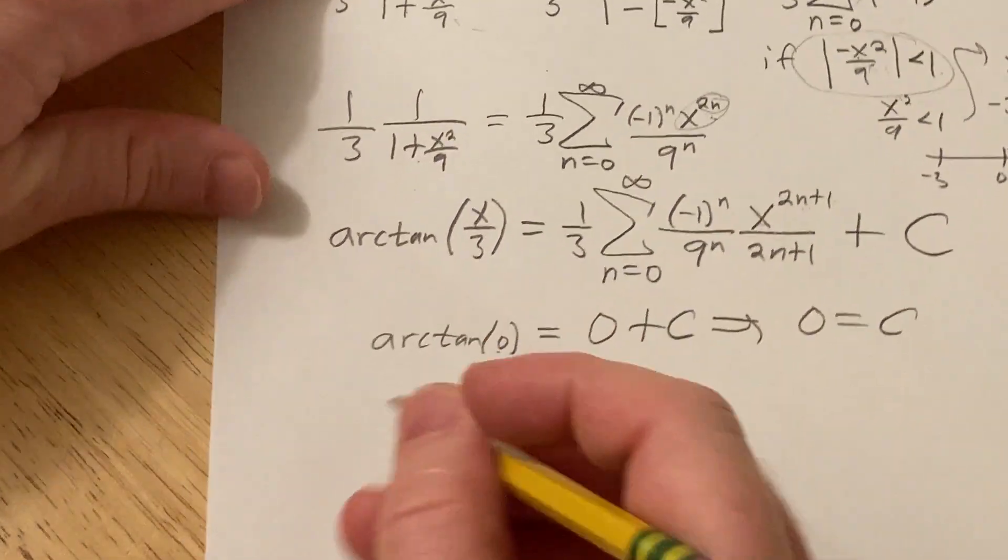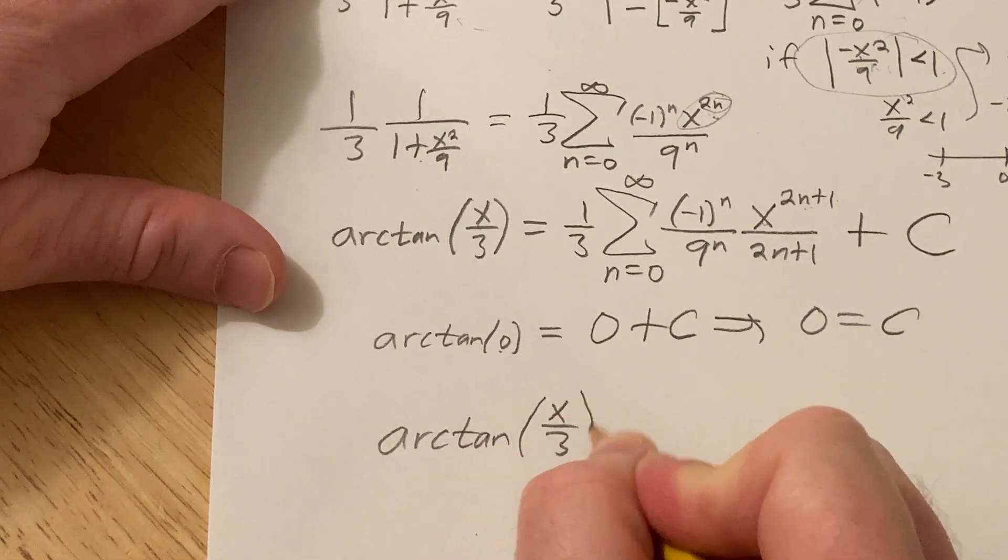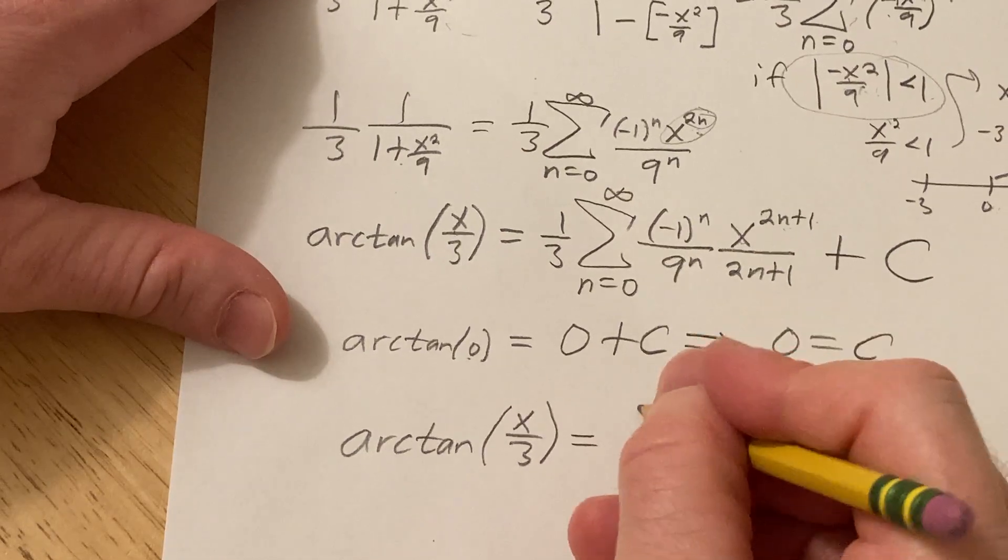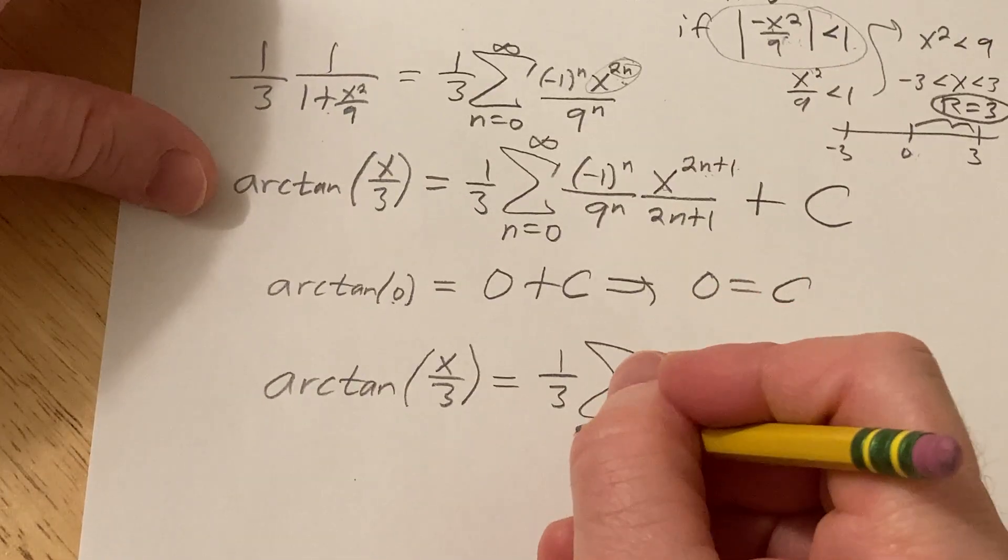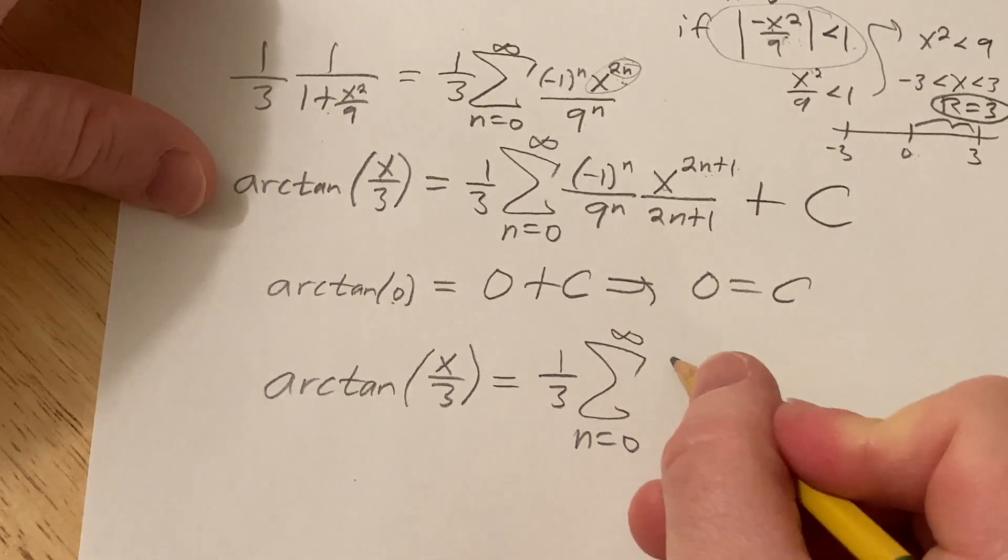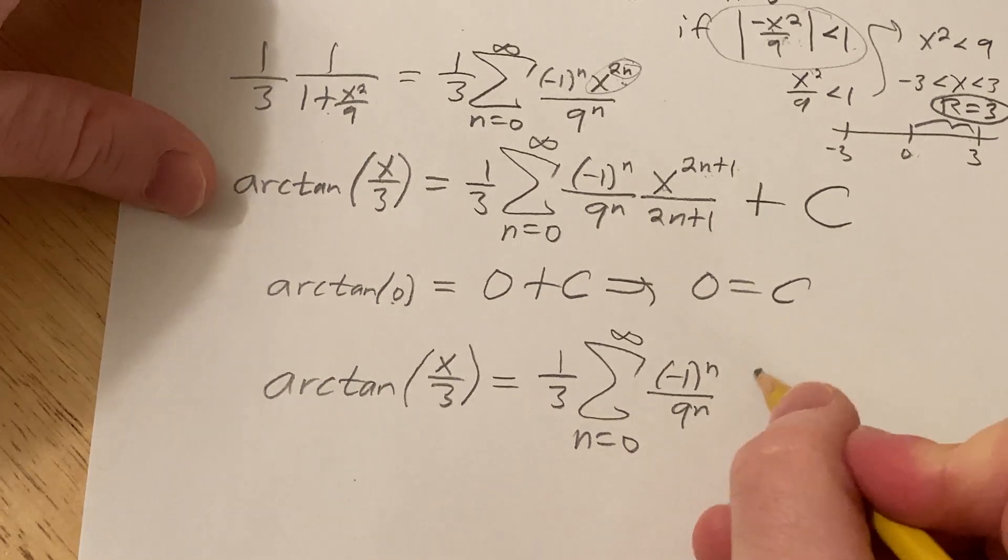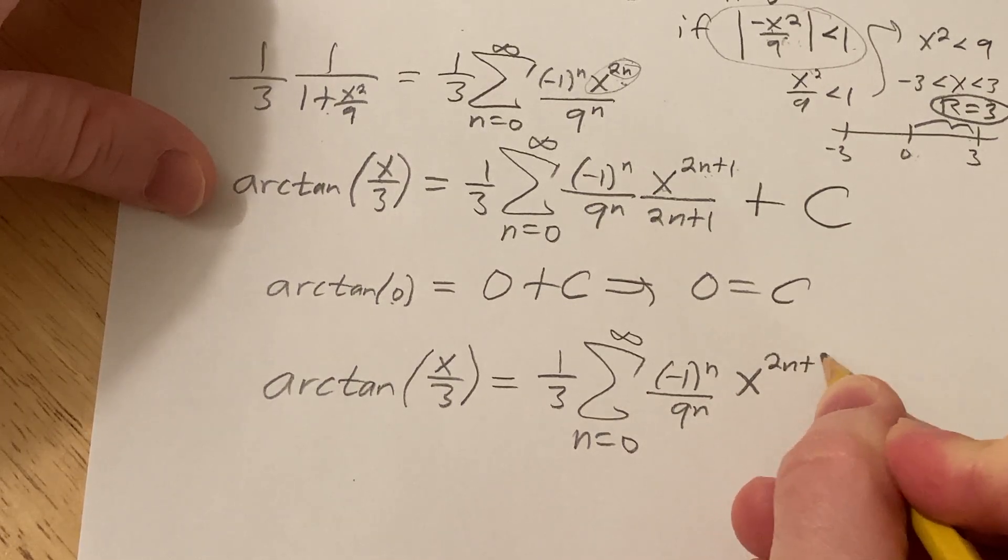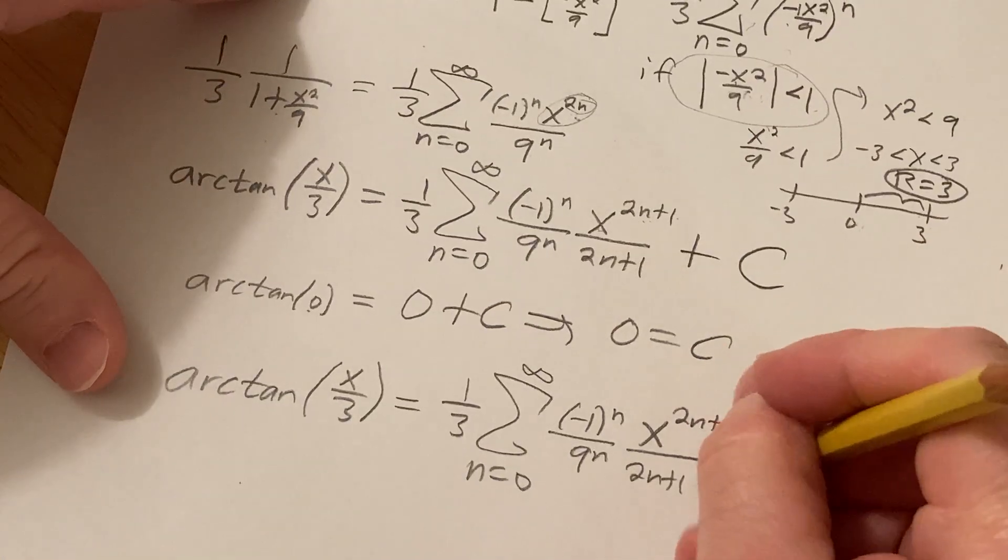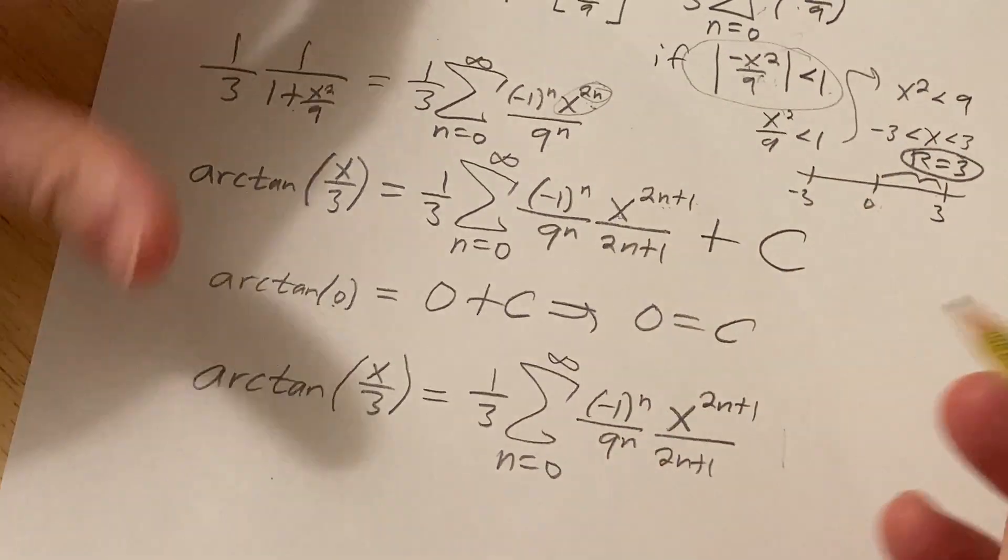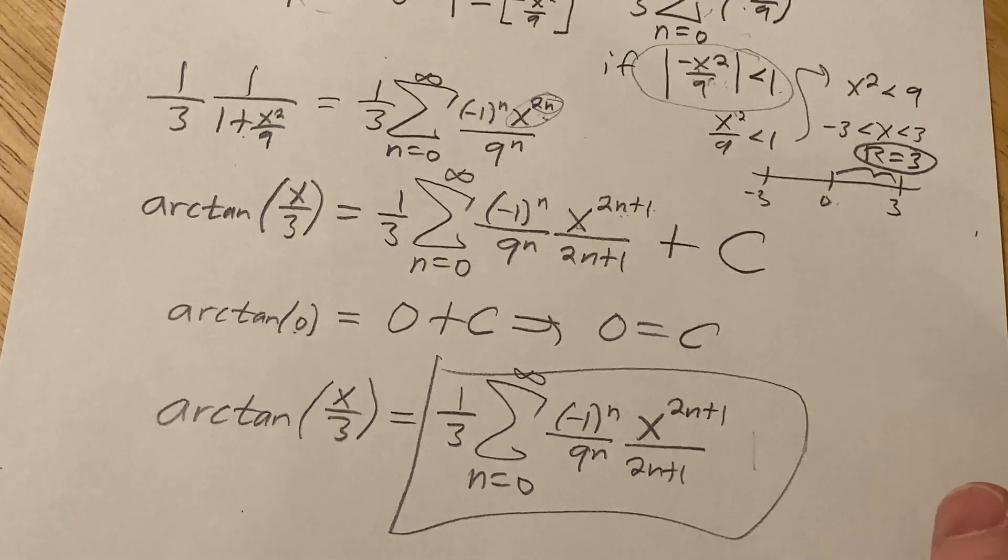So the final answer is arctan of X over 3 is equal to the infinite sum. So it's 1 third times the infinite sum as n runs from 0 to infinity of negative 1 to the n over 9 to the n. And then here we have X to the 2n plus 1 over 2n plus 1. Oh, there's no constant, right? So it's just, it's 0. So that's it. Boom. There it is. Fun times. Kind of a fun problem.